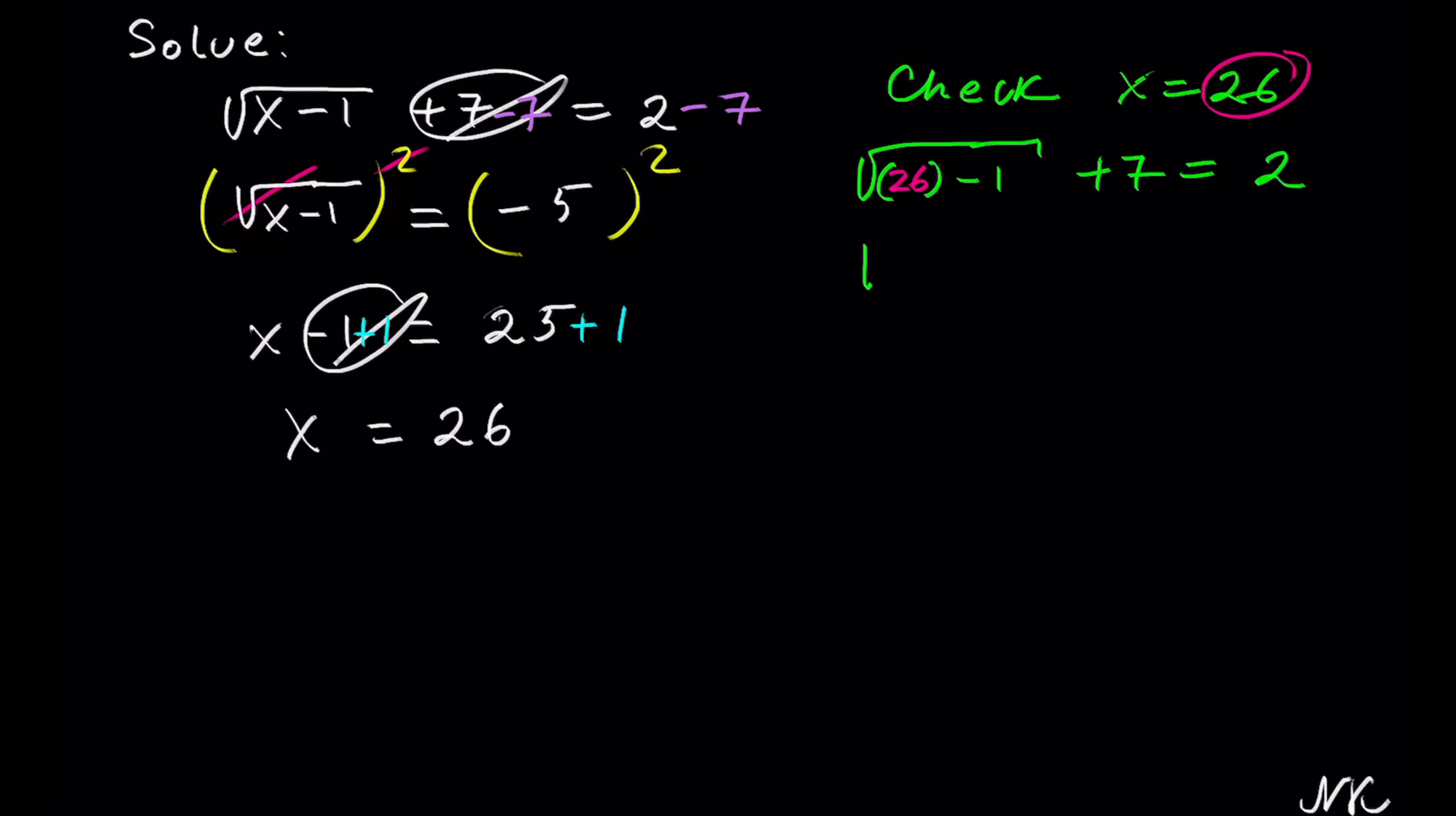This gives us square root of 26 minus 1, which is square root of 25, plus 7 equals 2. Square root of 25 is 5, plus 7 equals 2. 5 plus 7 is 12 equals 2. This is a false statement which is not true, so we need to reject x equals 26 as a solution.